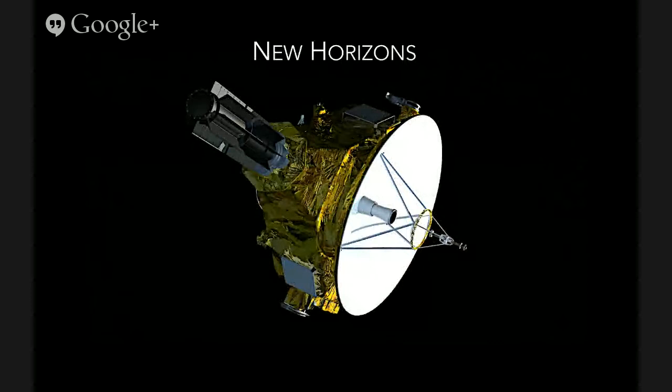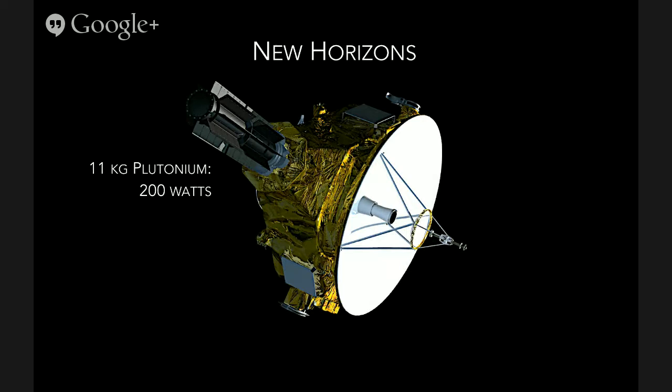So this is New Horizons. It's about the size of a grand piano. It's dominated by its high gain antenna. The whole thing, since we're operating in the outer solar system where sunlight is rather sparse, is powered by an RTG, 11 kilograms of plutonium-238. It dumps about 5 kilowatts of heat energy, and of that we can extract about 200 watts currently of usable electrical power. That's what we have to operate the entire spacecraft. It's less than a single element in your toaster oven.